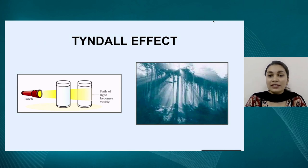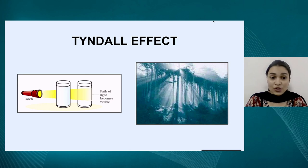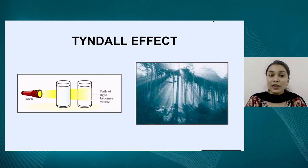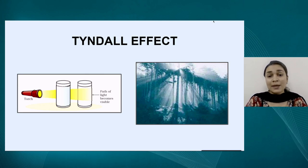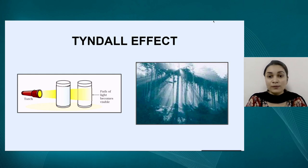This scattering of light is known as the Tyndall effect, named after the scientist who studied it. In the first diagram, a torch is shone through two solutions — a true solution and a suspension. In the suspension, the path of light becomes visible because the particles scatter light. We can see this effect in everyday life: sunrays visible in a dense forest shining through the tree canopy, or light rays visible through a window in a dusty room. These are examples of the Tyndall effect.